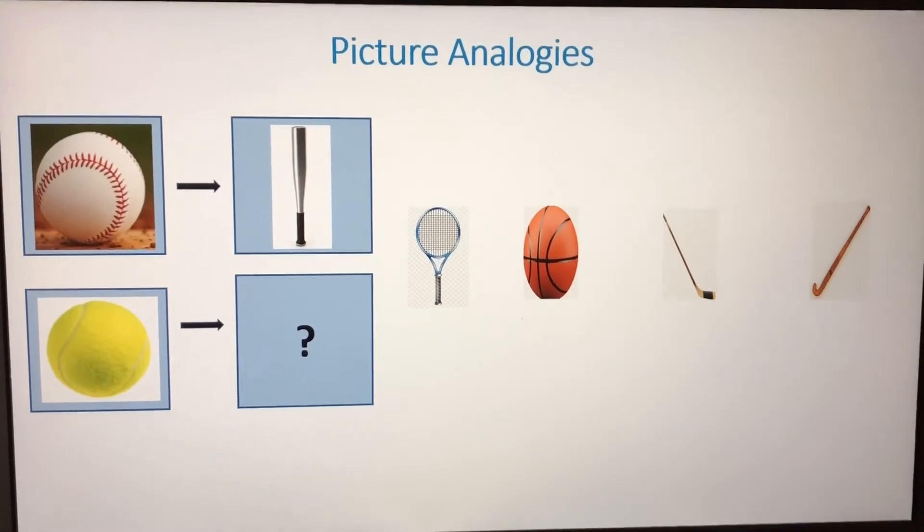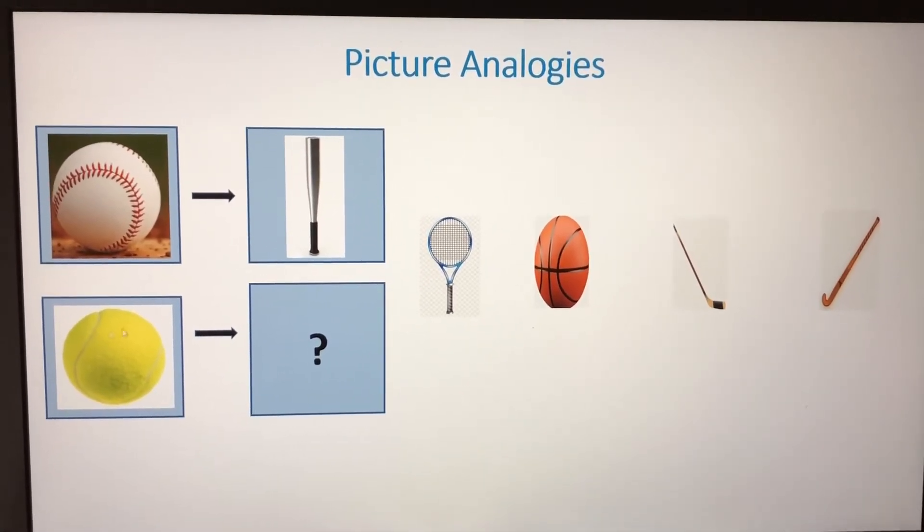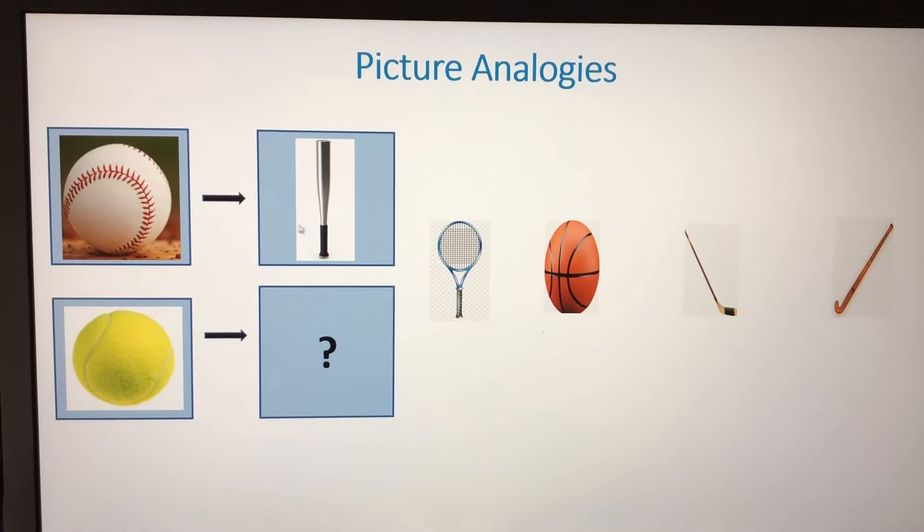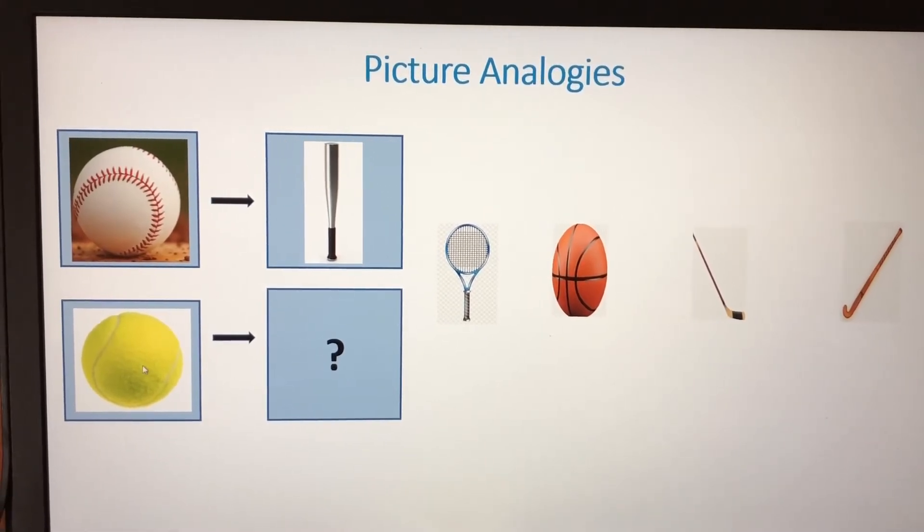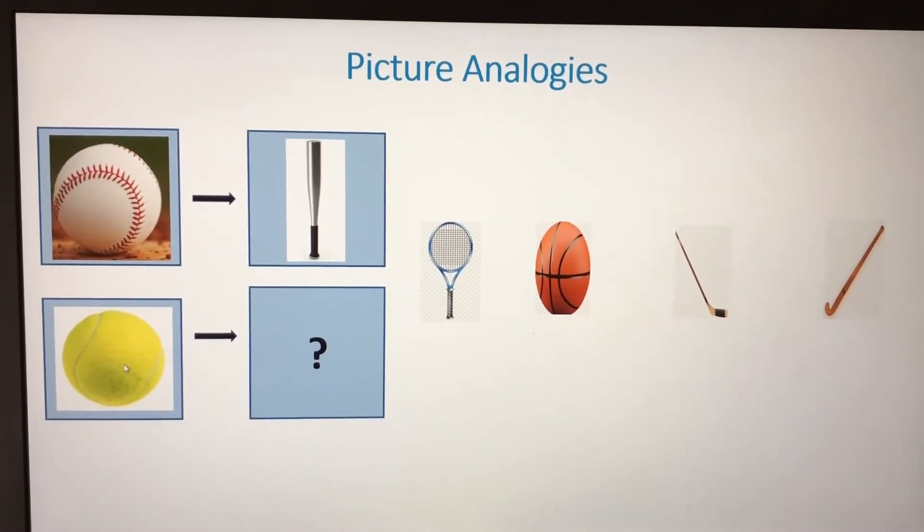Picture Analogies. The first picture is a baseball. The second picture is a baseball bat. In the bottom, there's a tennis ball.